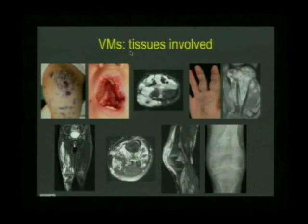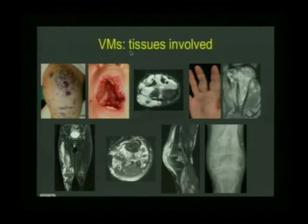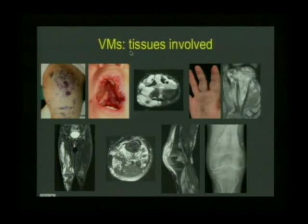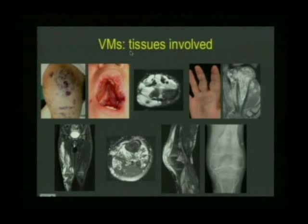Venous malformations involve many tissues — the skin and membranes. Here's a cross-sectional MR image of a limb showing it is both intramuscular and subcutaneous. In this child with diffuse disease in the thigh and upper calf, the axial T2 shows extensive intramuscular replacement with venous malformation, involvement of subcutaneous fatty tissues, intraarticular extension around the knee, and an associated chronic arthropathy.